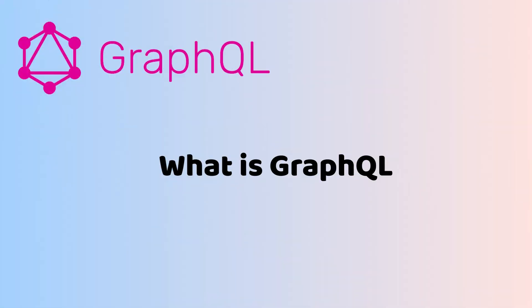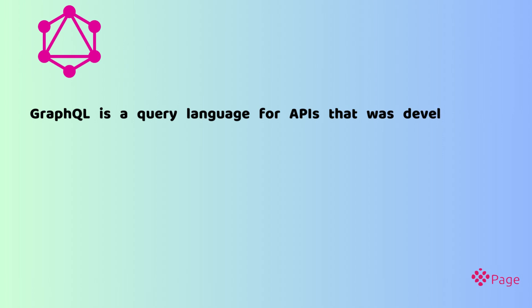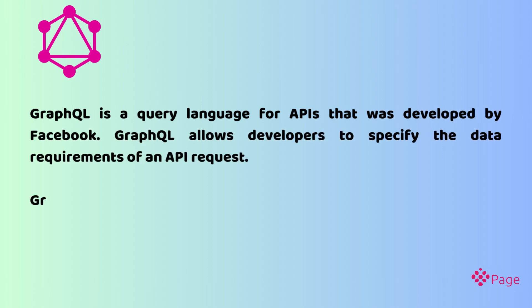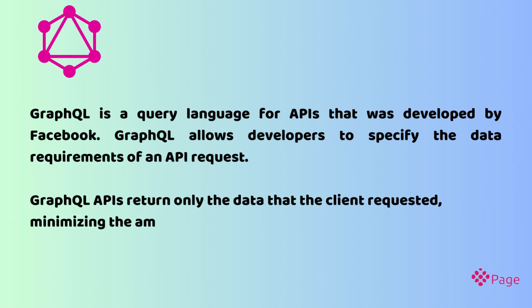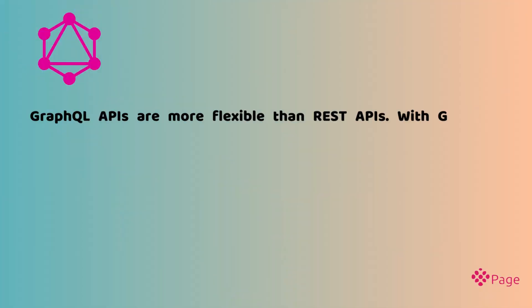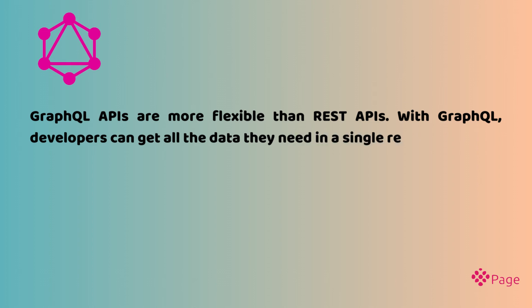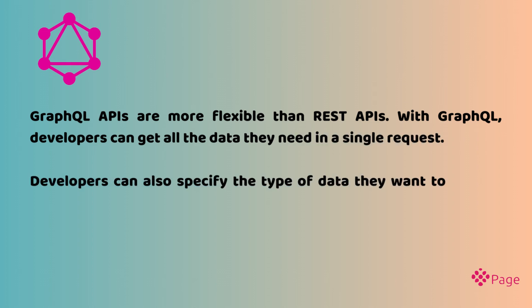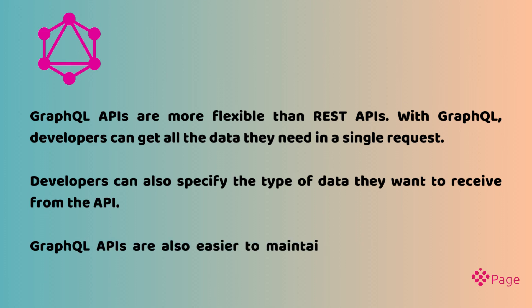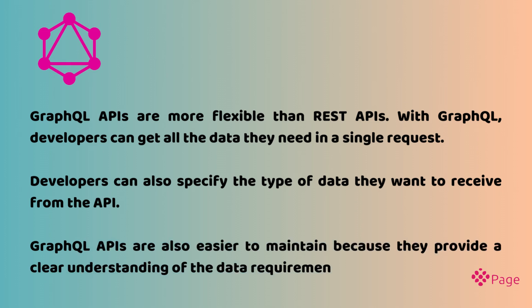What is GraphQL? GraphQL is a query language for APIs that was developed by Facebook. GraphQL allows developers to specify the data requirements of an API request. GraphQL APIs return only the data that the client requested, minimizing the amount of data sent over the network. With GraphQL, developers can get all the data they need in a single request and specify the type of data they want to receive. GraphQL APIs are also easier to maintain because they provide a clear understanding of the data requirements.